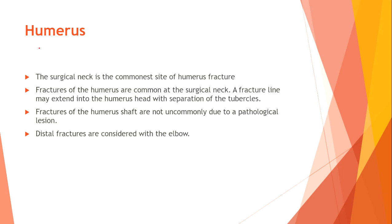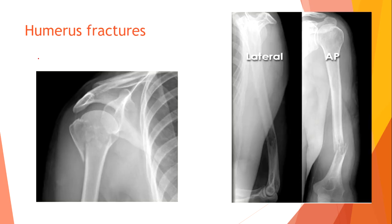Humerus. The surgical neck is the common site of humerus fracture. A fracture line may extend into the humeral head with separation of the tubercles. Fractures of the humerus shaft are not uncommonly due to a pathological lesion. Distal fractures are considered with the elbow. This example shows a pathological fracture due to decreased bone density, and a proximal end shaft bone break.